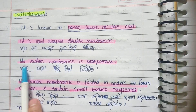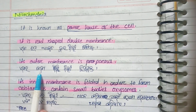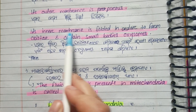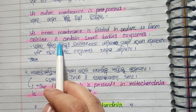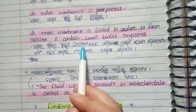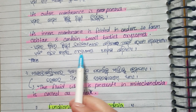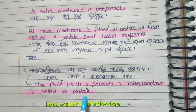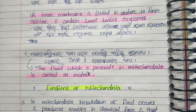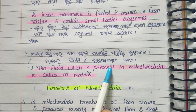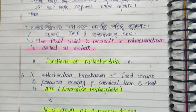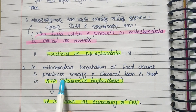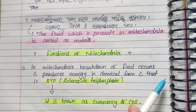The inner membrane of mitochondria is folded to form cristae, and contains certain small bodies. The fluid present in mitochondria is called the matrix, which also contains DNA and ribosomes. Mitochondria break down food and produce energy in chemical form, that is ATP.